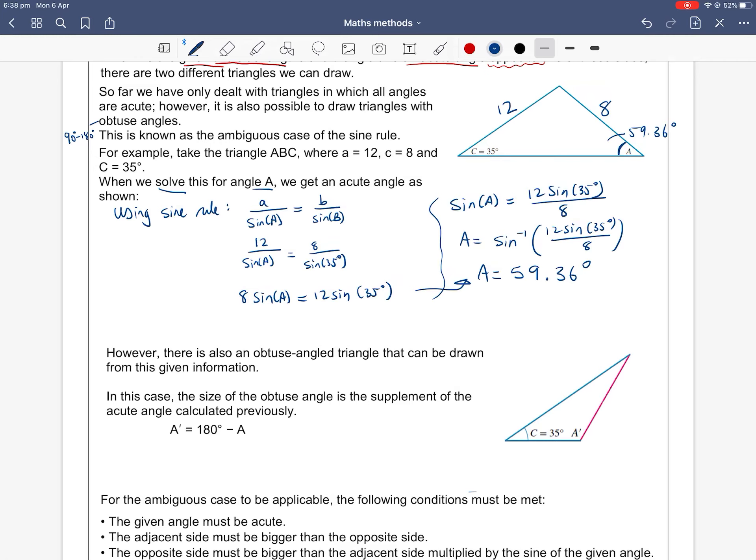Now this is where the ambiguous case is possible. However, there is also an obtuse angle triangle which can be drawn from this given information. Well, what is it?